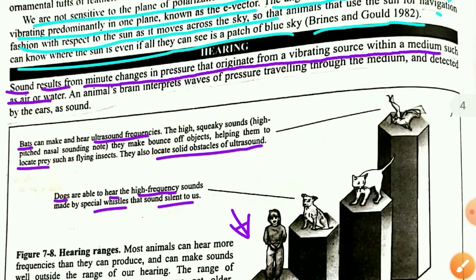Now let's read from our notes. Sound results from minute changes in pressure that originate from a vibrating source within a medium such as air or water. The sound results because minute changes in pressure travel from one source to another with the help of a medium, which can be air or water.